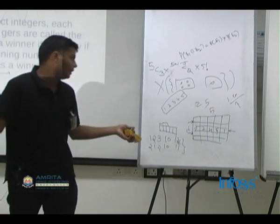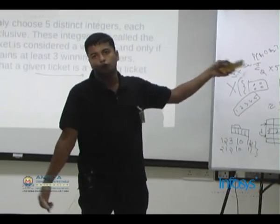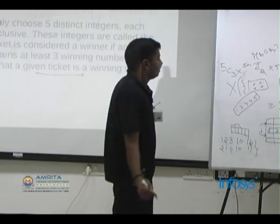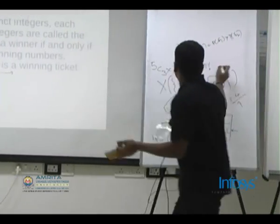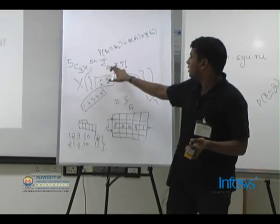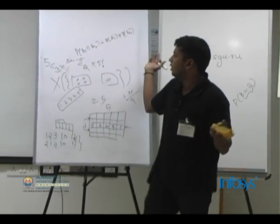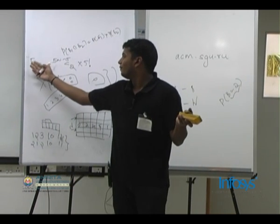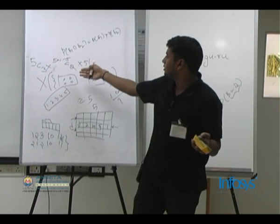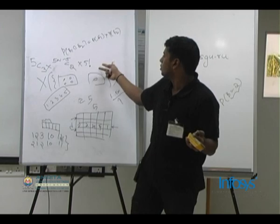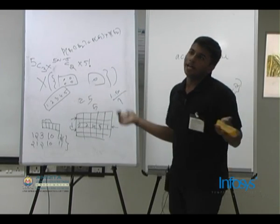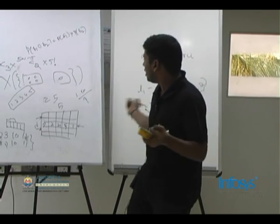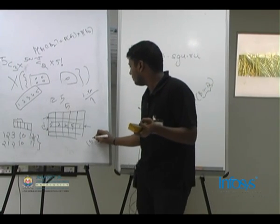That 5 factorial is the number of ways in which, after choosing the numbers, you can arrange them in the row. This assumes the row has exactly three winning numbers. If the row has four winning numbers it would be 5C4 times (n-5)C1 times 5 factorial. And fairly improbably, if all five are winning numbers it would be 5C5 times (n-5)C0 times 5 factorial. The answer is the sum of these three terms, multiplied by n.